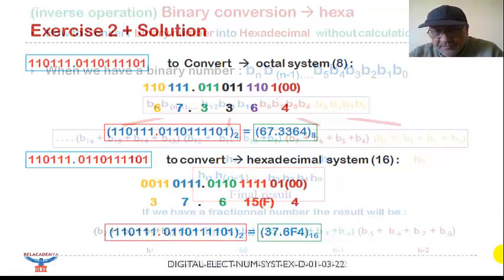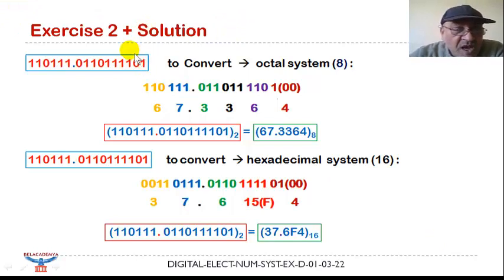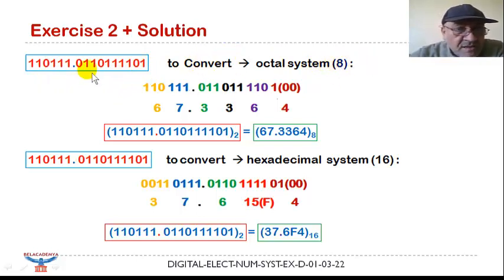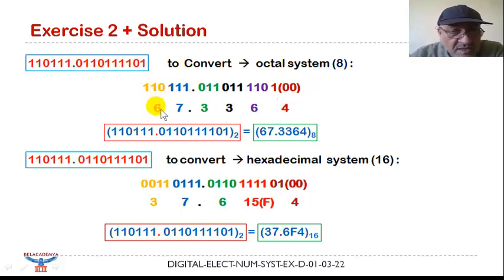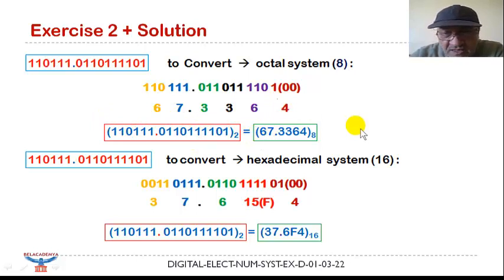Exercise two: we have a binary number to convert to octal system. As seen before, we take groups of three bits for the integer part, and three bits, three bits, three bits, and three bits for the fractional part. We make the sum of each group: this gives 6, 7, then 3, 3, 6, 4. The final conversion result is 67.3364 in octal system.